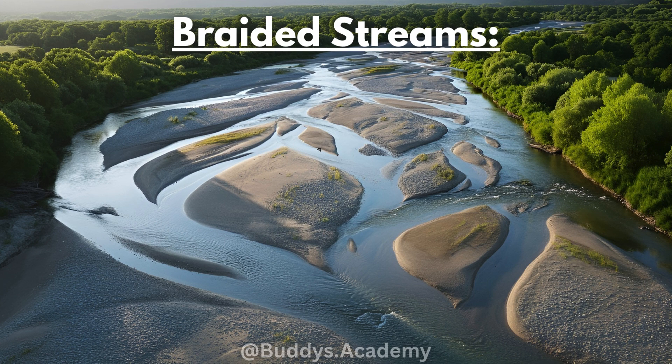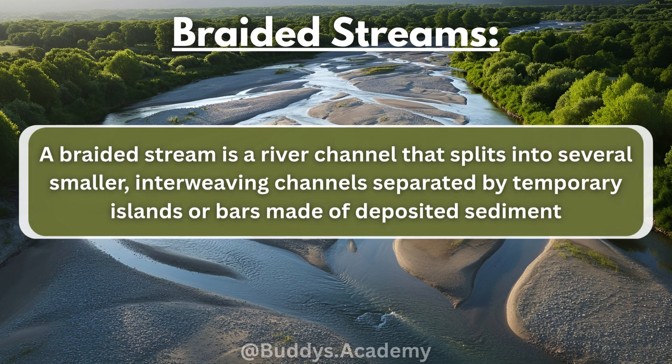So what are braided streams? A braided stream is going to be a river channel that splits into several smaller interweaving channels separated by temporary islands or bars made of deposited sediment. These sediments can include things like sand or pebbles. Simply put, a braided stream forms when a river lays down sediment that blocks its own path, causing the river to split into different smaller channels.